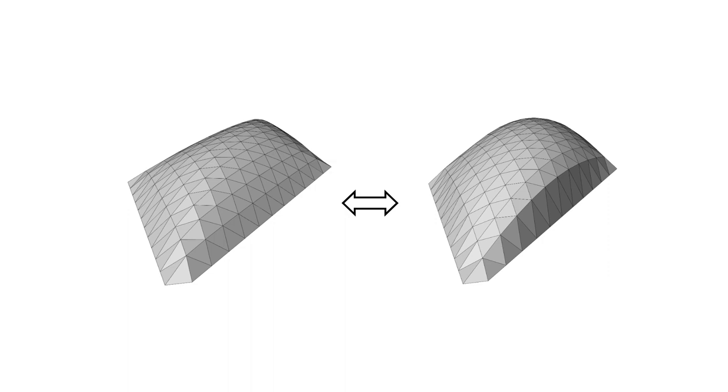So remarkably, either geometry can be the roof and the other the Airy stress function. This is analogous to the duality between the form and force diagram. Either can be the structural geometry and the other the forces in the structure. Eventually, the geometry on the left was used in the project.